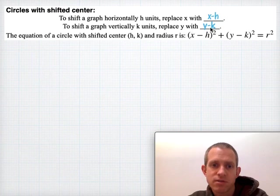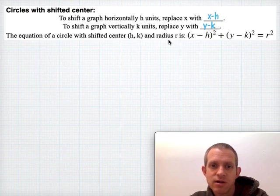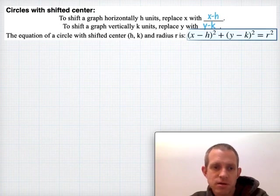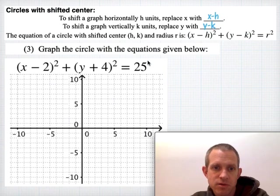Therefore, the equation for a circle that's been shifted and has its new center at (h, k) with a radius of r is: (x - h)² + (y - k)² = r². That's a good one to remember and highlight. Let's see it in action.